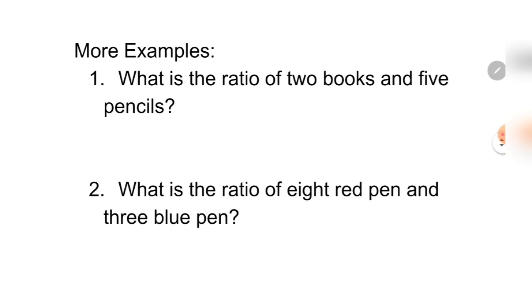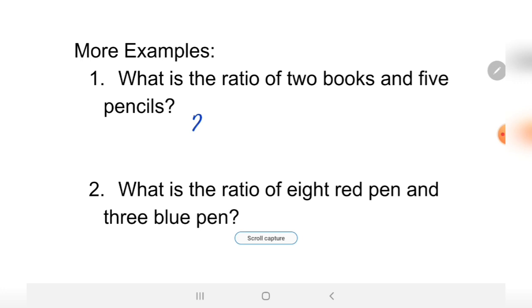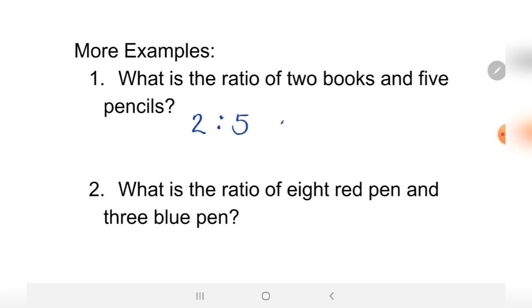More examples. What is the ratio of two books and five pencils? What is your answer? The ratio is two to five, or two over five.